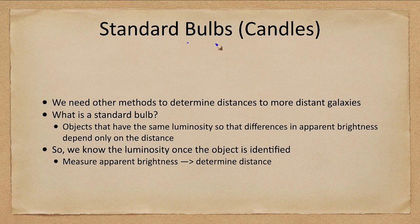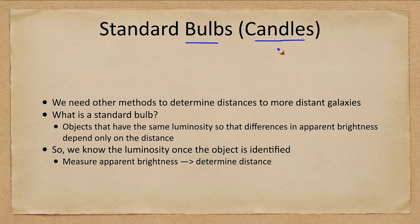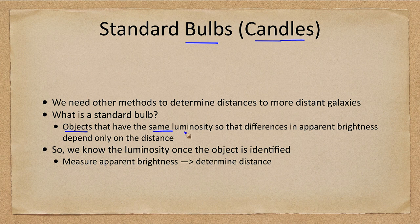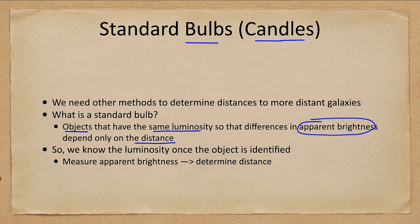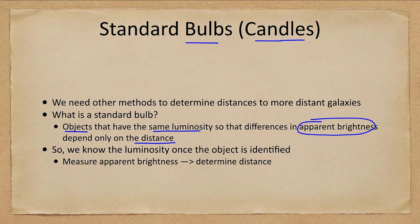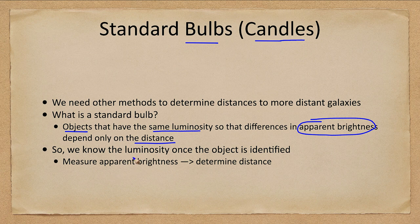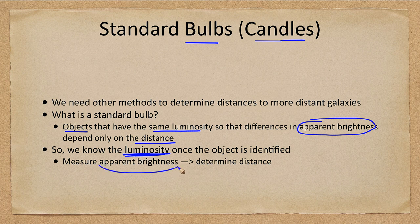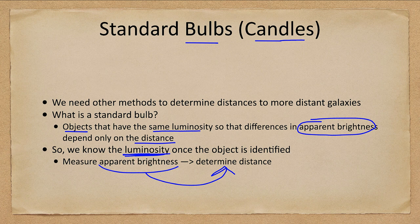Some things we use are what we call standard bulbs or candles. A standard bulb is an object with the same luminosity, so that any differences in the apparent brightness only depend on the distance. They're all just as bright. So if something is very faint, it must be further away. If it's very bright, it must be close. So once the object is identified, we know the luminosity. We measure the apparent brightness, which means we can then determine the distance to these.